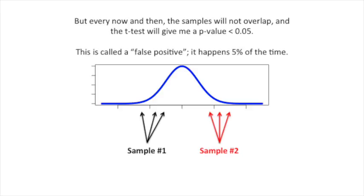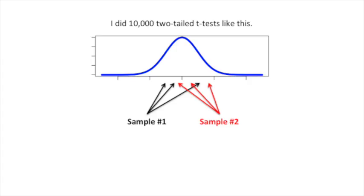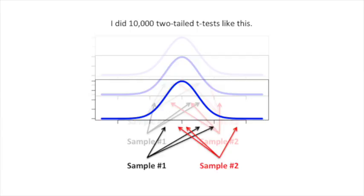This is called a false positive. It happens 5% of the time. I did 10,000 two-tailed t-tests on data like this. 5% of 10,000 equals 500, so I was expecting 500 false positives.